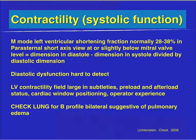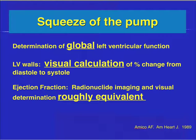Always check the lung for a B-line profile bilaterally, suggestive of pulmonary edema. No matter what the systolic function is — hyperdynamic or poor — bilateral B lines suggest the heart is not keeping up with fluid, at least in the short term. You are not giving an ejection fraction; you're giving a relative assessment. Poor function is roughly 10–40%, normal is 50–60%, and anything above 65% is hyperdynamic.